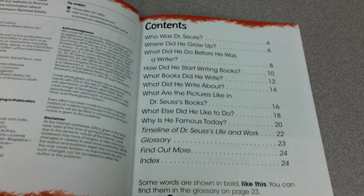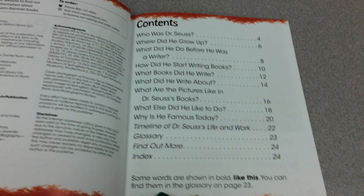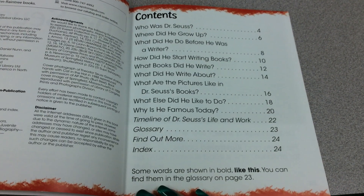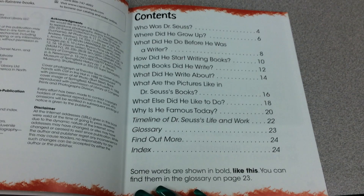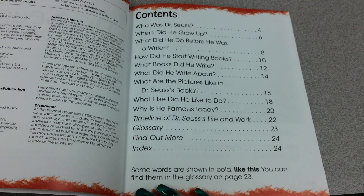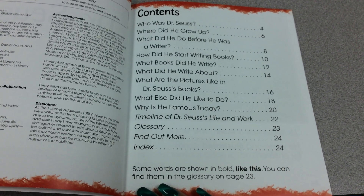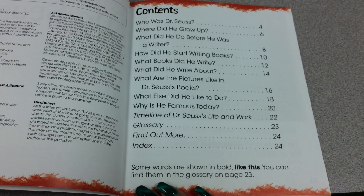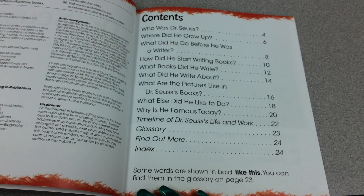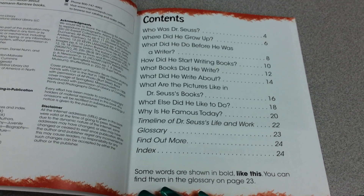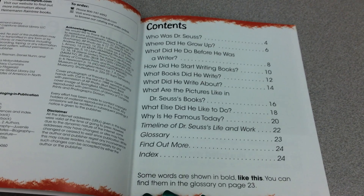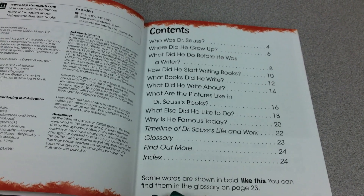Contents: Who was Dr. Seuss? Page 4. Where did he grow up? Page 6. What did he do before he was a writer? Page 8. How did he start writing books? Page 10. What books did he write? Page 12. What did he write about? Page 14. What are the pictures like in Dr. Seuss's books? Page 16. What else did he like to do? Page 18. Why is he famous today? Page 20. Timeline of Dr. Seuss's life and work, Page 22. Glossary, Page 23. Find out more, Page 24. Index, Page 24.